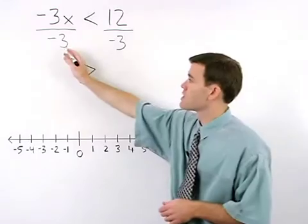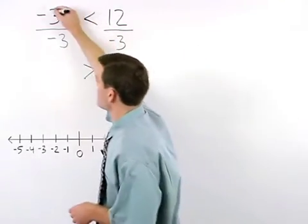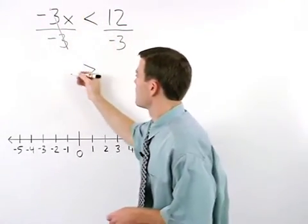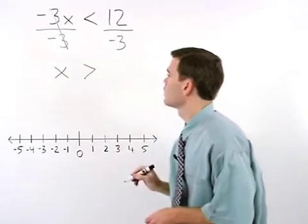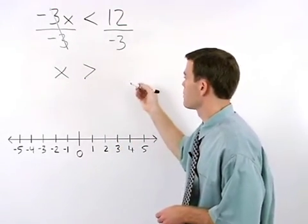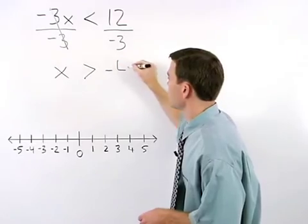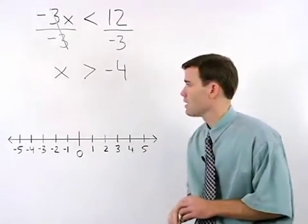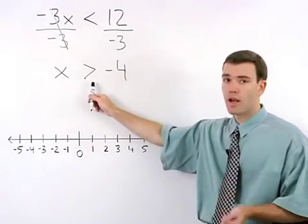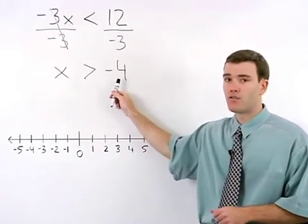On the left side, the negative 3s cancel and we're left with x. And on the right side, 12 divided by negative 3 is negative 4. So we have x is greater than negative 4.